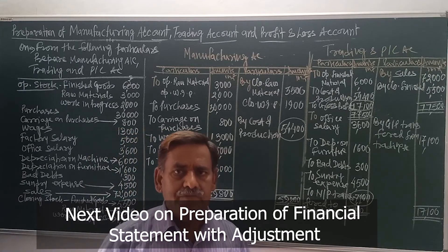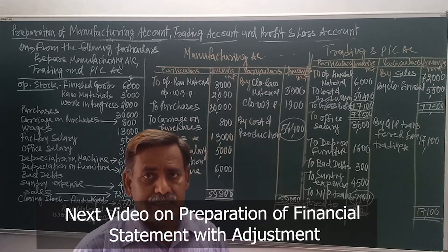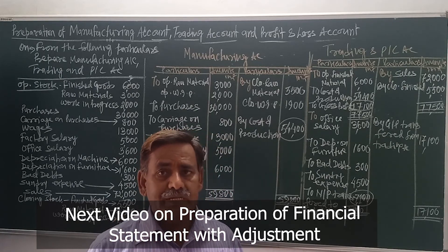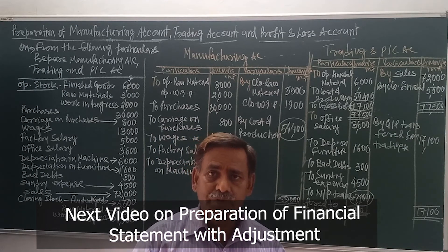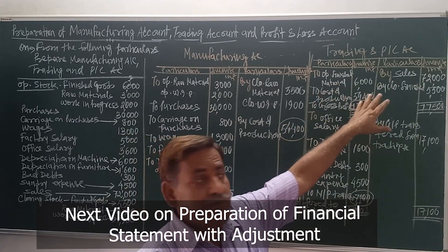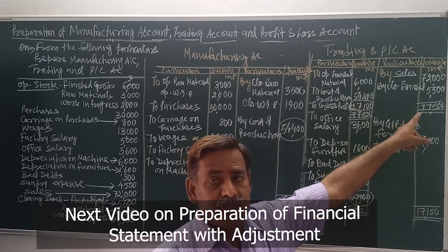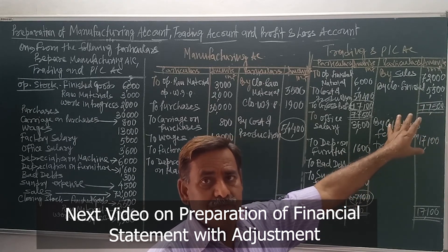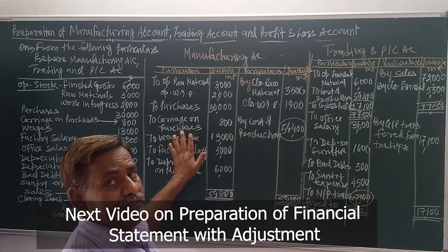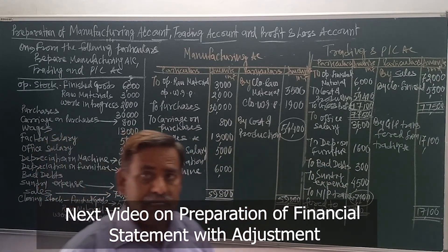Financial accounts with adjustments will be our next video. Before that, this was an important topic — because every producer not only produces goods but also sells them, so to know the cost of production, manufacturing account is prepared. Then for trading activities, trading account and profit and loss account are also prepared. The basic difference is: when manufacturing account is prepared, all production-related items that were written in trading account will now go into manufacturing account — except finished material and sales value. Opening finished goods, closing finished goods, and sales are trading activities. Also, in P&L account, depreciation-related expenses and losses that were related to manufacturing are now shown in manufacturing account since machines are directly used in manufacturing.